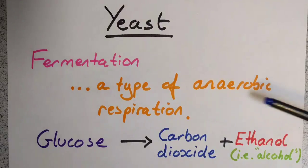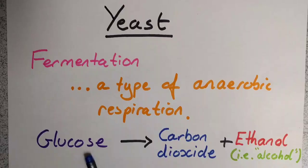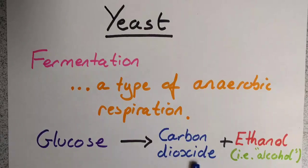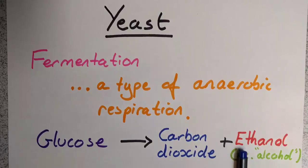In fermentation, glucose is broken down using enzymes — all of these biological reactions use enzymes. Glucose is broken down to release carbon dioxide, which is captured in tiny bubbles to make bread rise and to make some beers and wines fizzy, and it also produces ethanol.